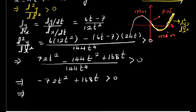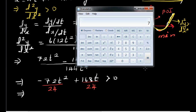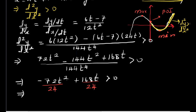Factoring — we can divide both terms by 24. Since 72 ÷ 24 = 3 and 168 ÷ 24 = 7, this gives −3t² + 7t > 0, which we can write as t(−3t + 7) > 0.